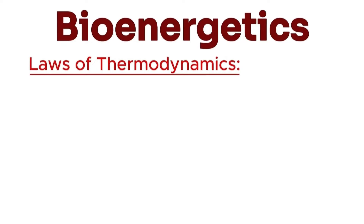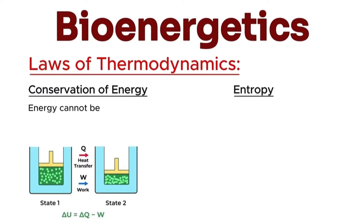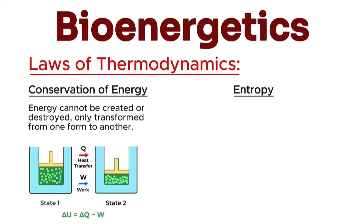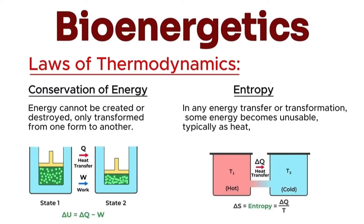There are two laws of thermodynamics important for bioenergetics. The first law says energy cannot be created or destroyed, only transformed from one form to another. According to the second law, in any energy transfer or transformation, some energy becomes unusable, typically as heat, increasing the entropy of the system.